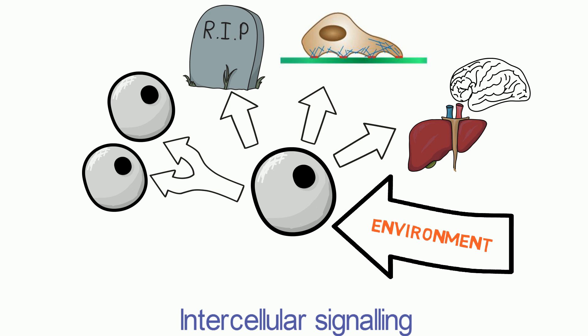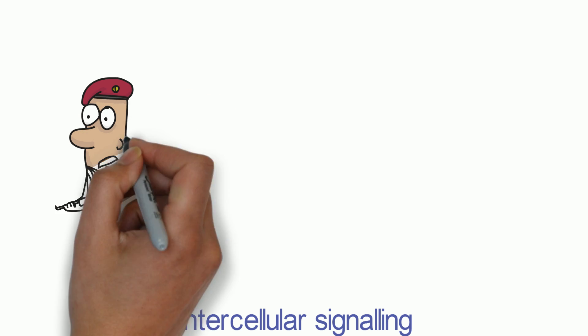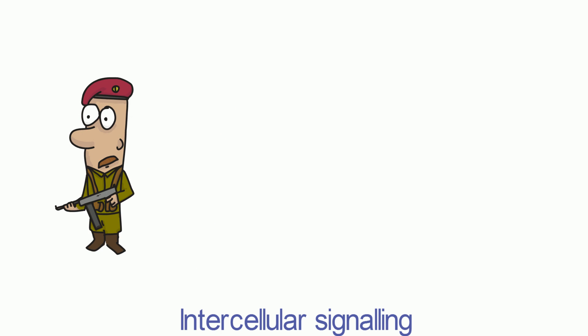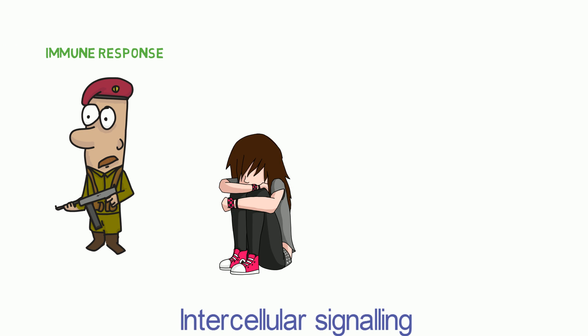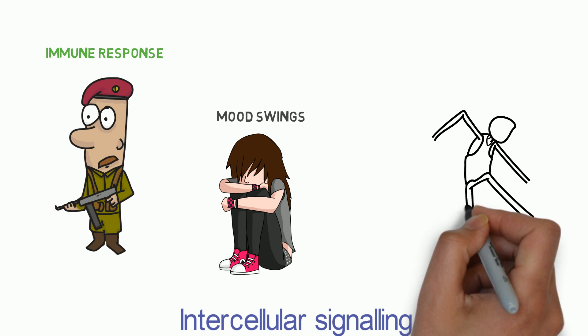For large complex organisms, cell signaling is also important for functional regulation and integration of processes such as the immune response, mood swings in puberty, and the ability to think and move.